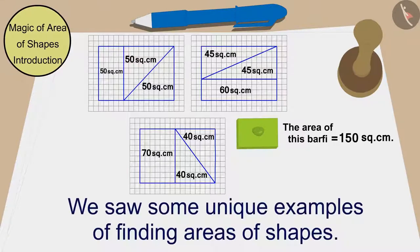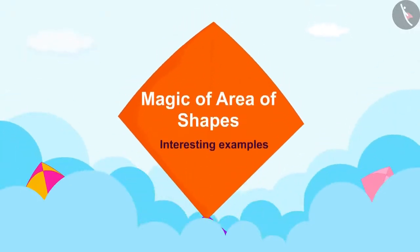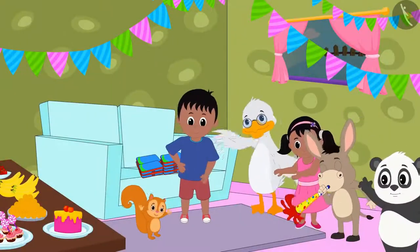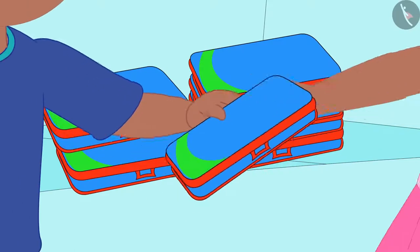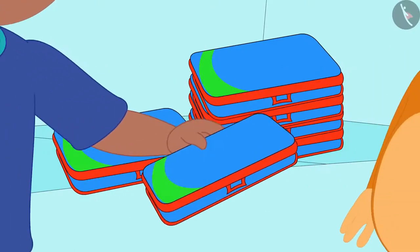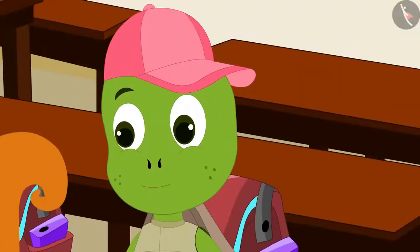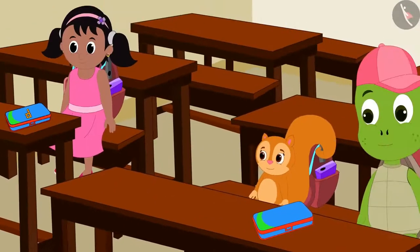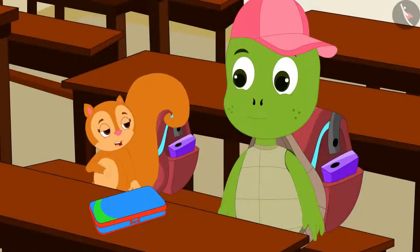In the previous video, we saw some unique examples of finding areas of shapes. At Raju's birthday party, Raju gave compass boxes of the same design to all the children. The next day, Pinky, Chanda and Tufan get excited and bring their new compass box to school.